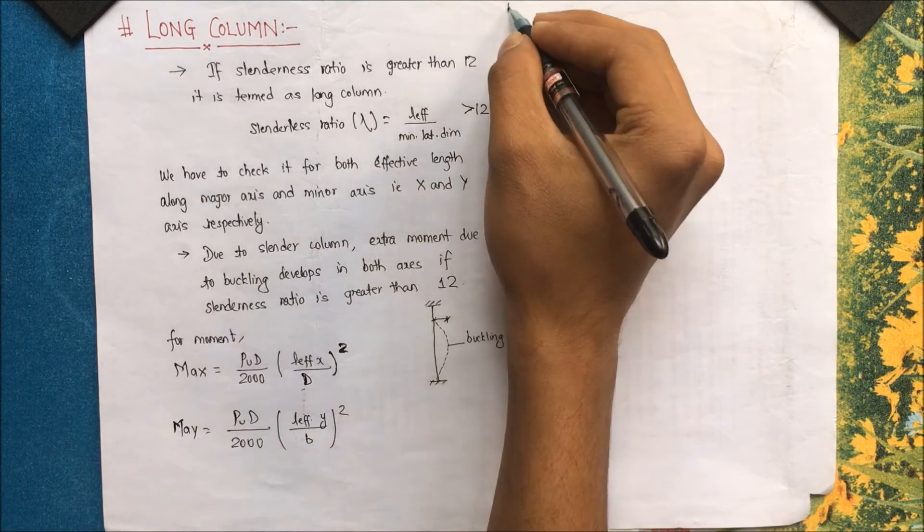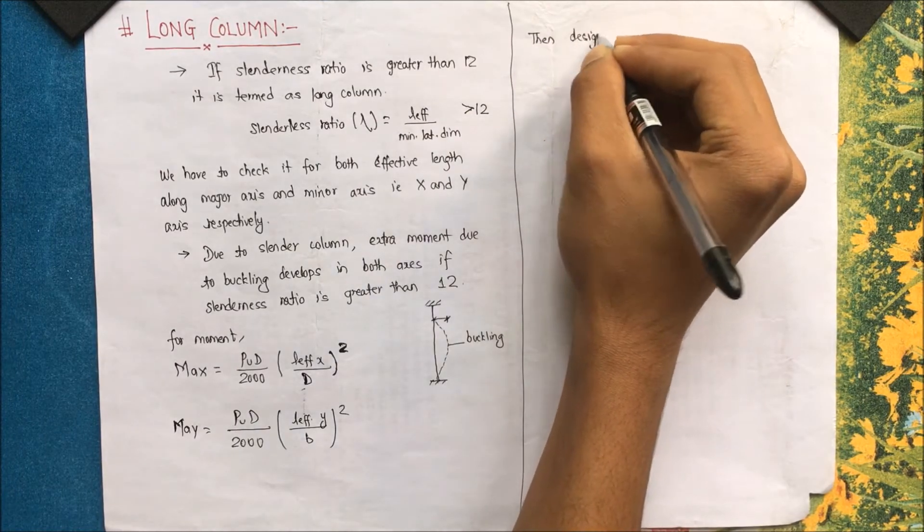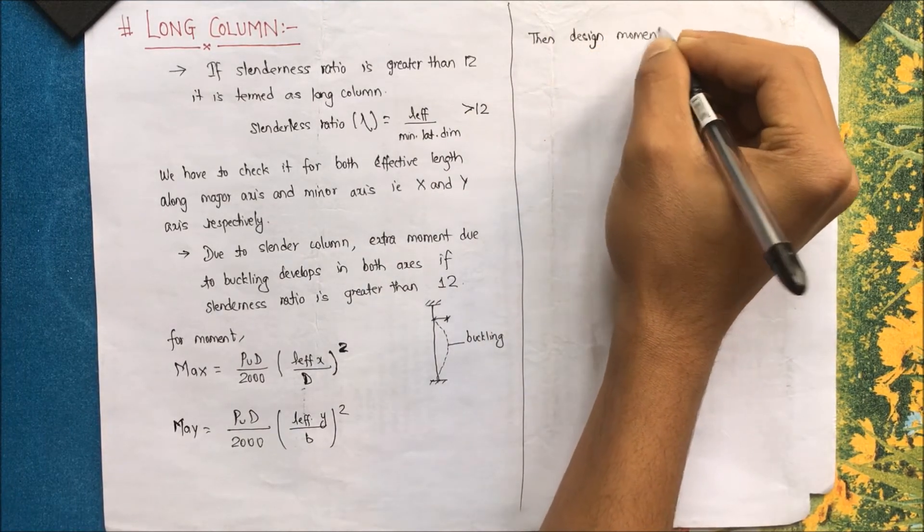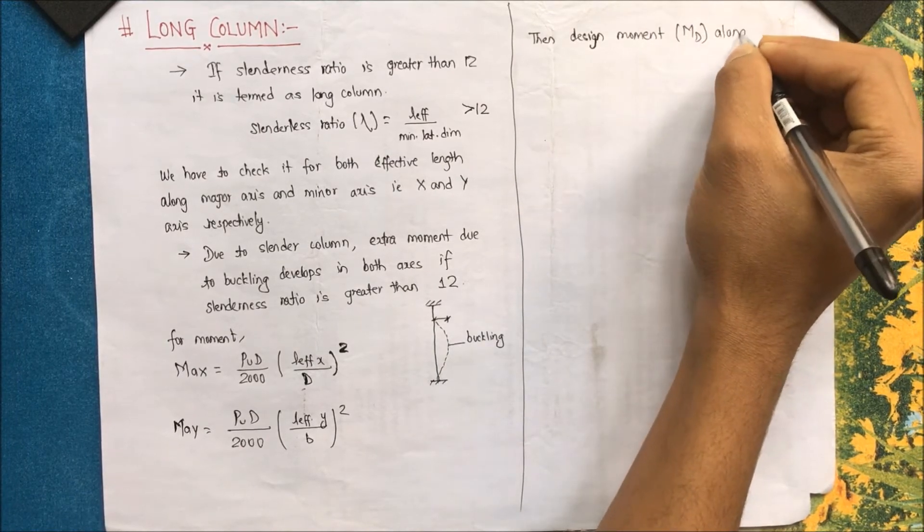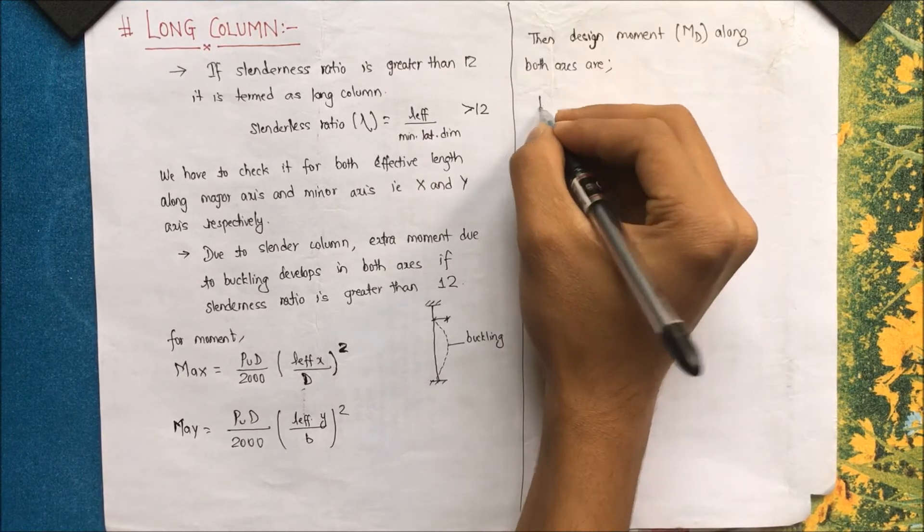Now the design moment, as we design a beam or a column with respect to the load acting on it, so design moment M_d along both axes will be an addition of existing moment and these additional moments.